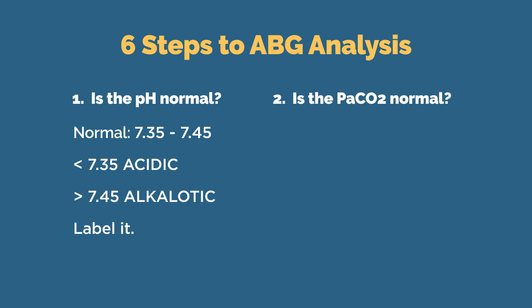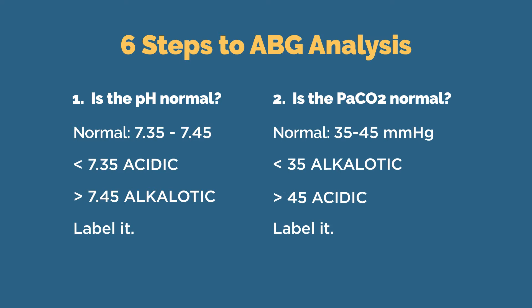Second, is the carbon dioxide level normal? Remember, normal CO2 levels are 35 to 45. If the CO2 value falls below 35, it is abnormal and indicates an alkalotic environment. If the CO2 value falls above 45, it is abnormal and indicates an acidic environment. So once you know your CO2 value and if it is acidic or alkalotic, label it.